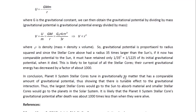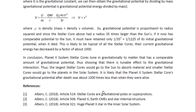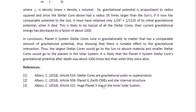The gravitational energy has decreased by a factor of about a thousand. So in conclusion, Planet X system stellar cores tune in gravitationally to matter that has a comparable amount of gravitational potential, thus showing that there is a tunable effect to the gravitational interaction. The larger stellar cores would go to the Sun to absorb material, and smaller stellar cores would go to the planets in the solar system. It is likely that the Planet X system stellar cores' gravitational potential after death was about 1,000 times less than when they were alive. This is Dr. Claudia Albers, Planet X physicist. Thank you for watching.